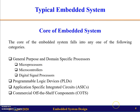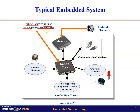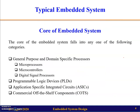The core of the embedded system can be a microprocessor, microcontroller, SOC, DSP, ASIC, or FPGA. The core can fall into one of these categories: first, general purpose and domain specific processors; second, PLDs (programmable logic devices); and third, commercial off-the-shelf components, also called COTS.